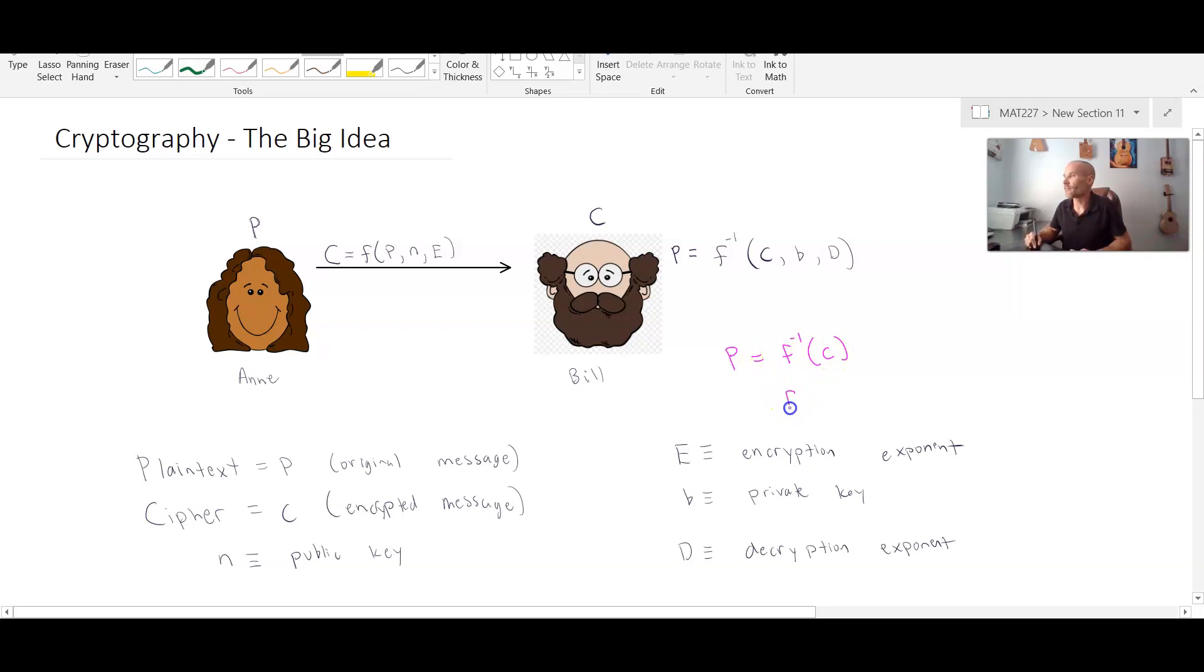But if I take f of p, we know that that gives us the value of c. And then if I take the inverse of that, the inverse of that, that allows me to achieve the value of p again.